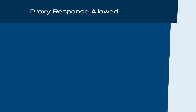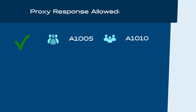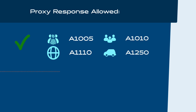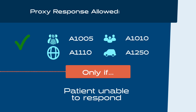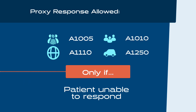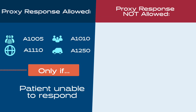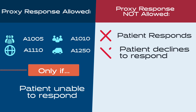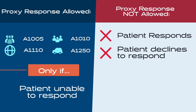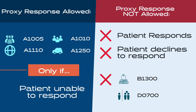Let's review. A proxy response can be used to code SDOH items A1005 ethnicity, A1010 race, A1110 language, and A1250 transportation. For these items, a proxy response can only be used if the patient is unable to respond. A proxy response may not be used if the patient offers a response or declines to respond. A proxy response may not be used to code SDOH items B1300 health literacy and D0700 social isolation.